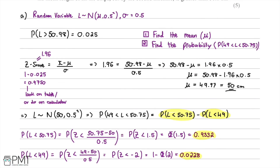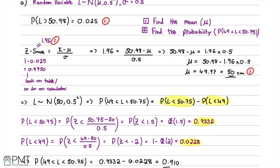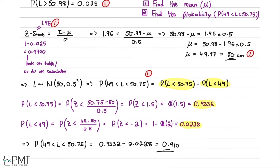This question had five marks available. The first mark was for identifying that P(L > 50.98) = 0.025. The second mark was for correctly finding the z-score of 1.96. The third mark was for finding μ = 50. The fourth mark was for setting up P(49 < L < 50.75), and the final mark was for the correct answer of 0.910.